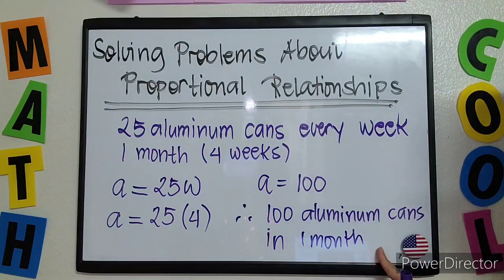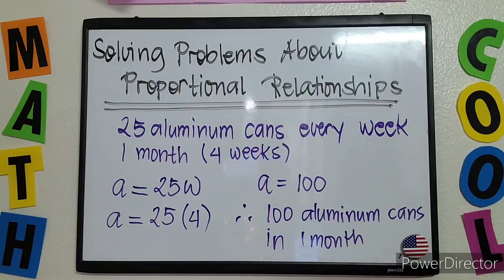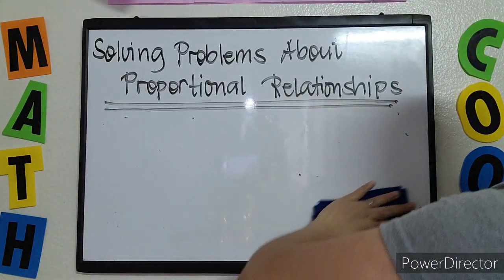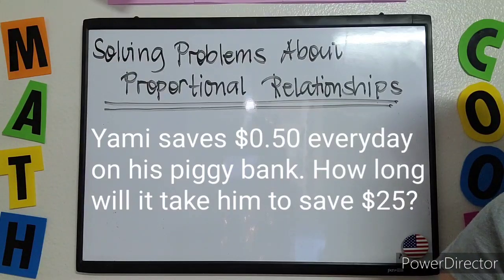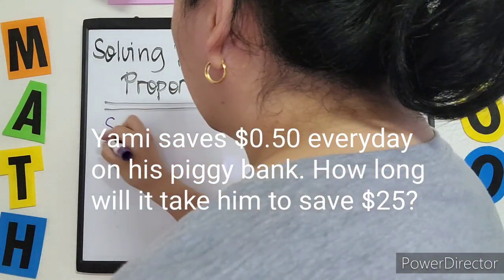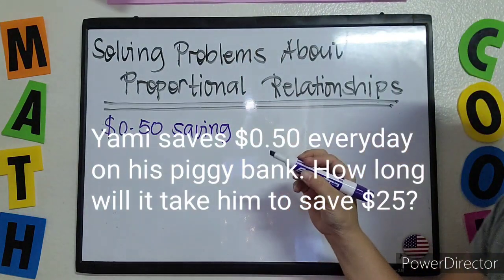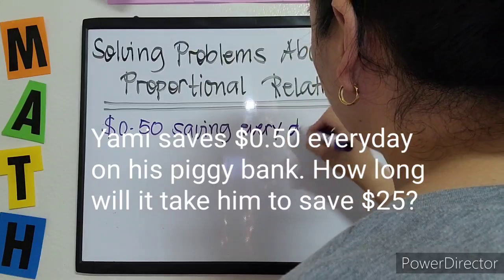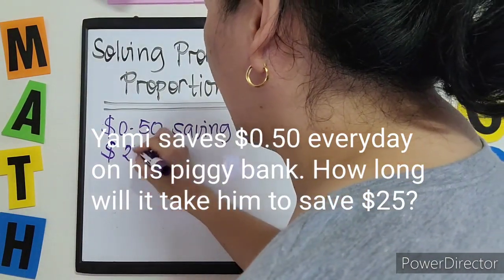This is your final answer — you have to write down what that 100 represents. Example number two: Yanny saves $0.50 every day in his piggy bank. So the unit rate is $0.50 per day. The question is: how long will it take him to save $25? So we are searching for the number of days needed to save $25.